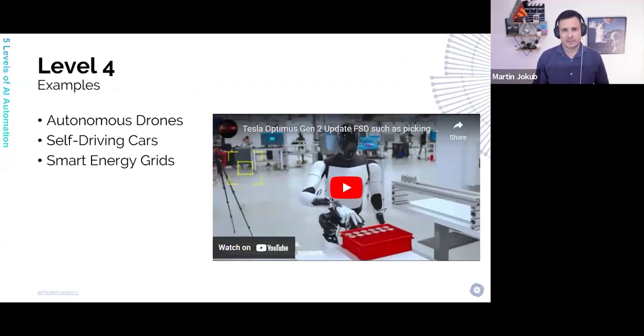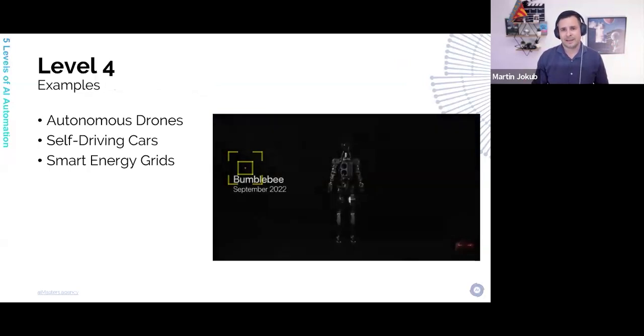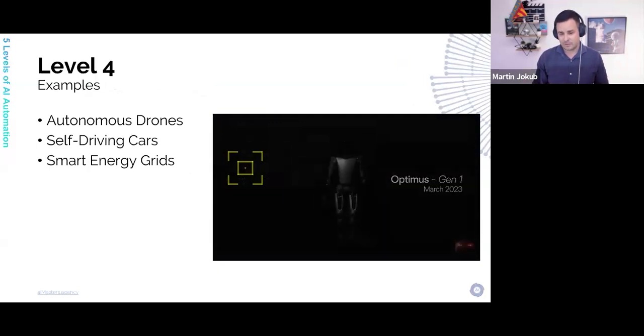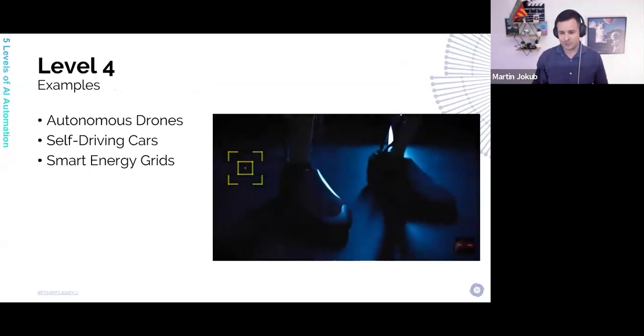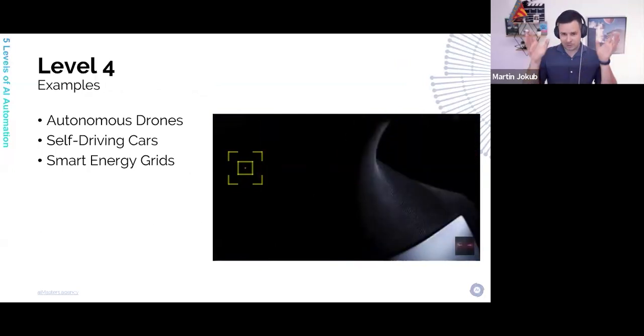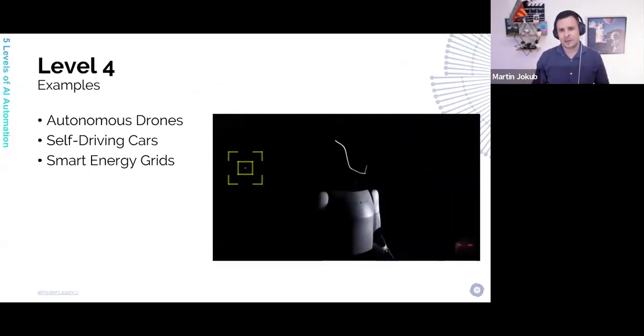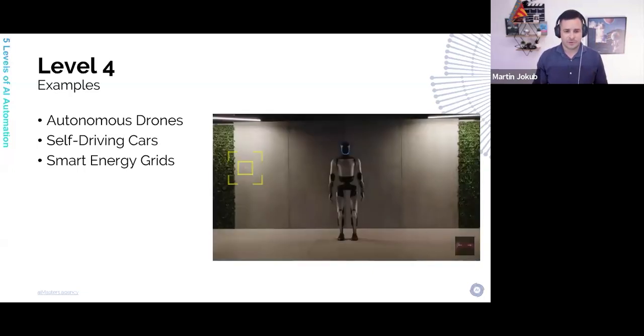One of the examples is Tesla's bot, Optimus bot, and how it was just presented in September 22. Today, we have June 24, so almost two years ago, from that bot or robot, what looked really ugly, to the Generation 3 Optimus bot,